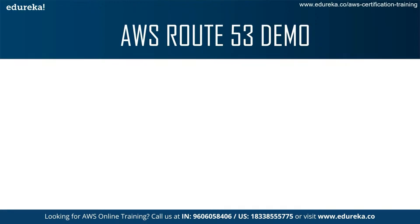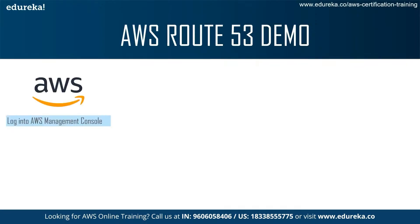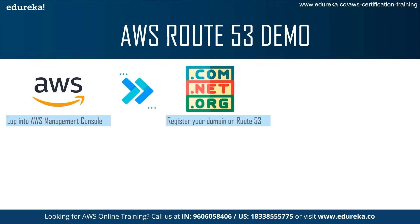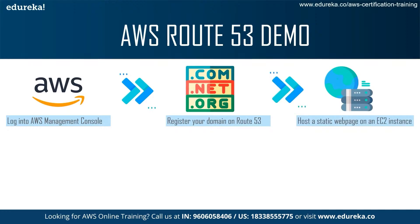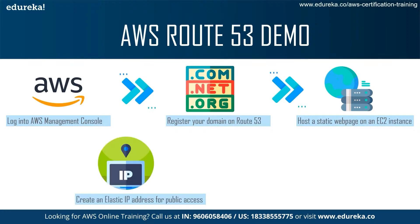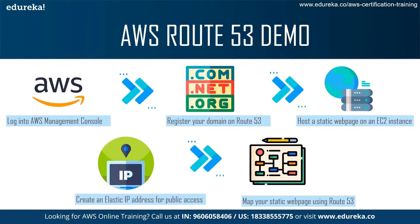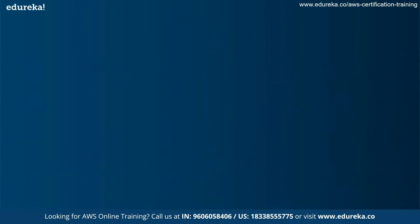From the demo, we learned how Route 53 works: first, log into the AWS Management Console, then register your domain on Route 53 — either a paid domain (.com, .net, .org) or a free domain integrated with AWS Route 53. Next, host a static web page on an EC2 instance such as a t2.micro running Ubuntu, use PuTTY to access the instance, create an elastic IP address for public access, and finally map your web page using Route 53.